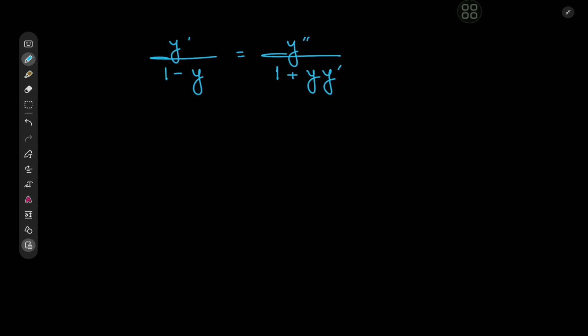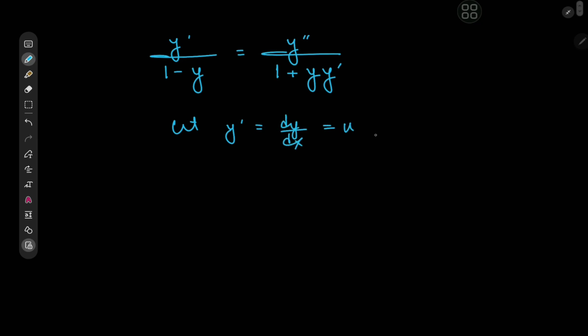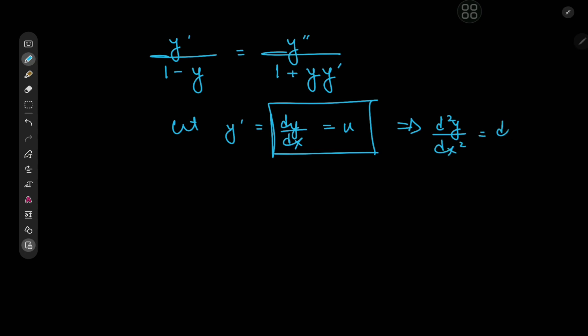So how exactly should we start? We could move things around and expand the multiplication, but notice that the x term is missing, so we have what's called an autonomous differential equation. We'll make the substitution letting y prime, that's dy by dx, equal to u. This implies that d squared y by dx squared equals du by dx.